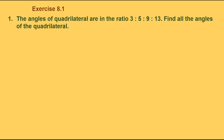Exercise 8.1, the first problem. The angles of the quadrilateral are in the ratio 3 is to 5 is to 9 is to 13. Find all the angles of the quadrilateral. So the ratio of all four angles of the quadrilateral is given to us and we need to find the value of all four angles. Given: the ratio of angles of the quadrilateral is 3:5:9:13.